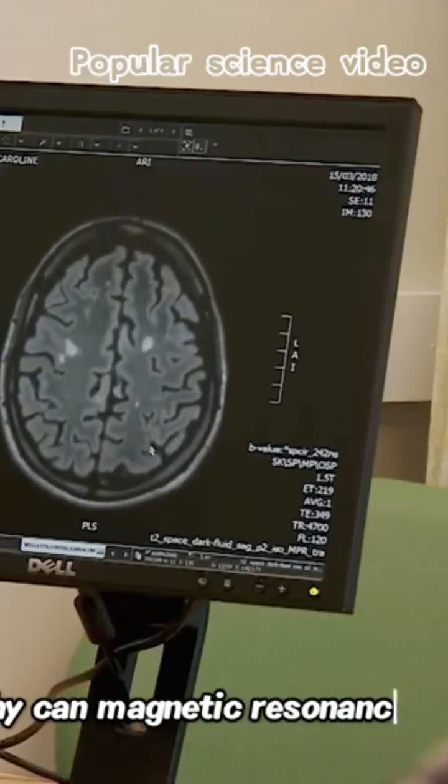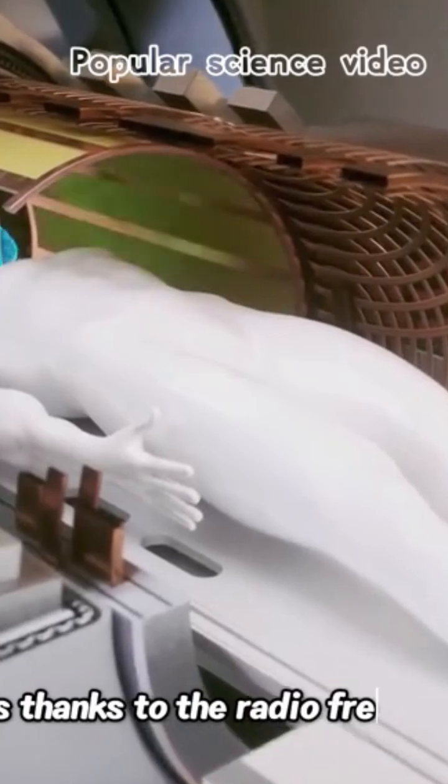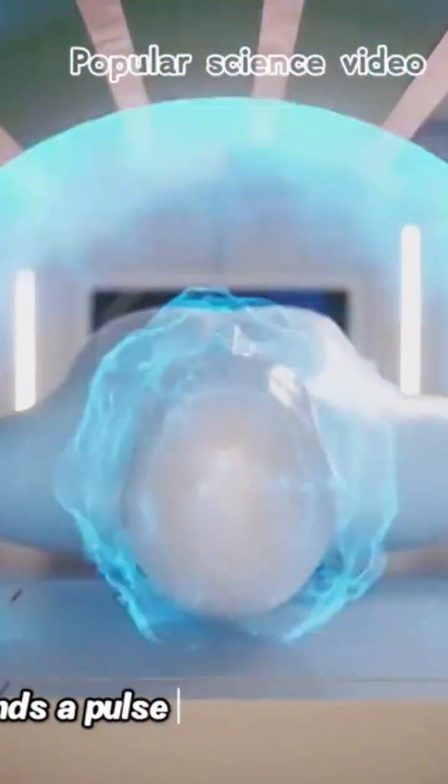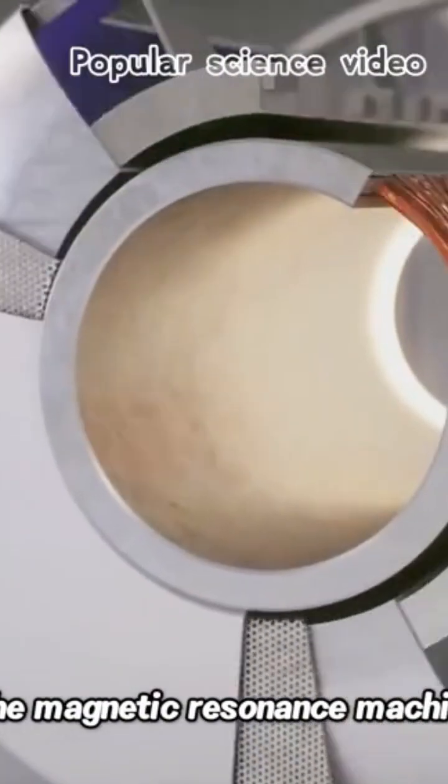So why can magnetic resonance imaging scan a certain part? This is thanks to the radio frequency coil. It sends a pulse signal to a certain part. Only in this way can the human body be scanned. Magnetic resonance machines...